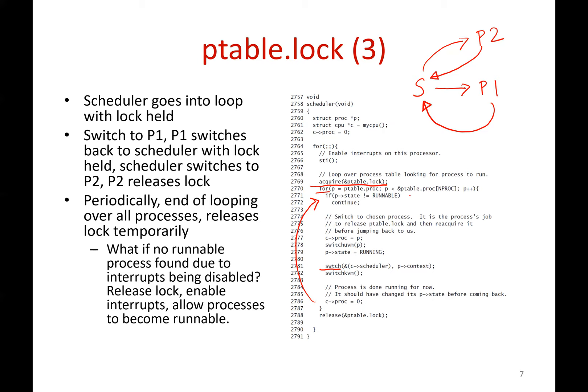Sometimes the scheduler finishes the inner loop — at the end it releases the ptable lock, goes back to the outer for loop, and reacquires the lock again. So periodically the scheduler releases the lock for some time and reacquires it later. Why? Because whenever the ptable lock is held, all interrupts are disabled. If many processes are blocked waiting for disk reads or other events, constantly holding the lock and keeping interrupts disabled is not good. So periodically, the scheduler releases the lock, waits for interrupts and processes to become runnable, then repeats.